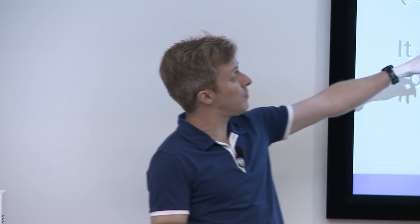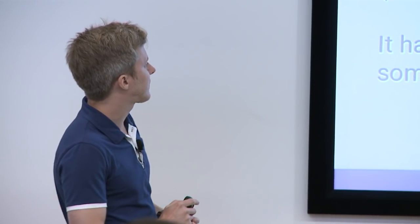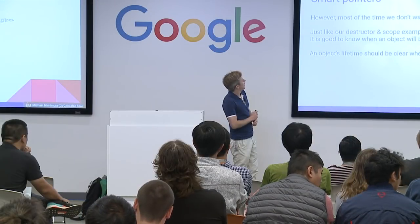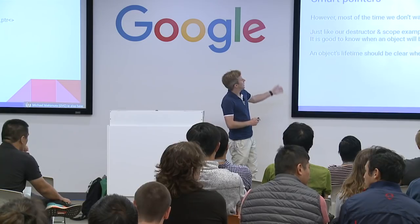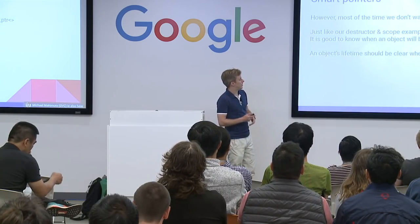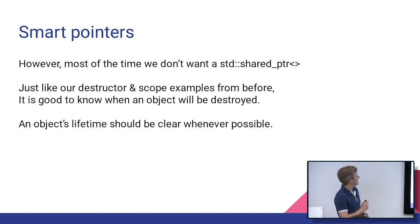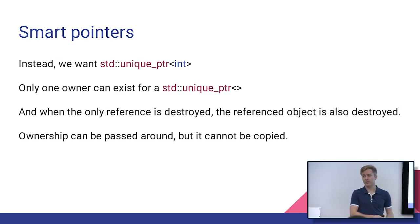And although I'm showing you a standard shared pointer, we actually don't use that in Chrome. We use base shared ref. It's basically the same thing, though. OK, yeah, and I told you that most of the time, we don't actually want to use a standard shared pointer. So the alternative to shared pointer is unique pointer. It makes sense. There's only one owner. It is unique.